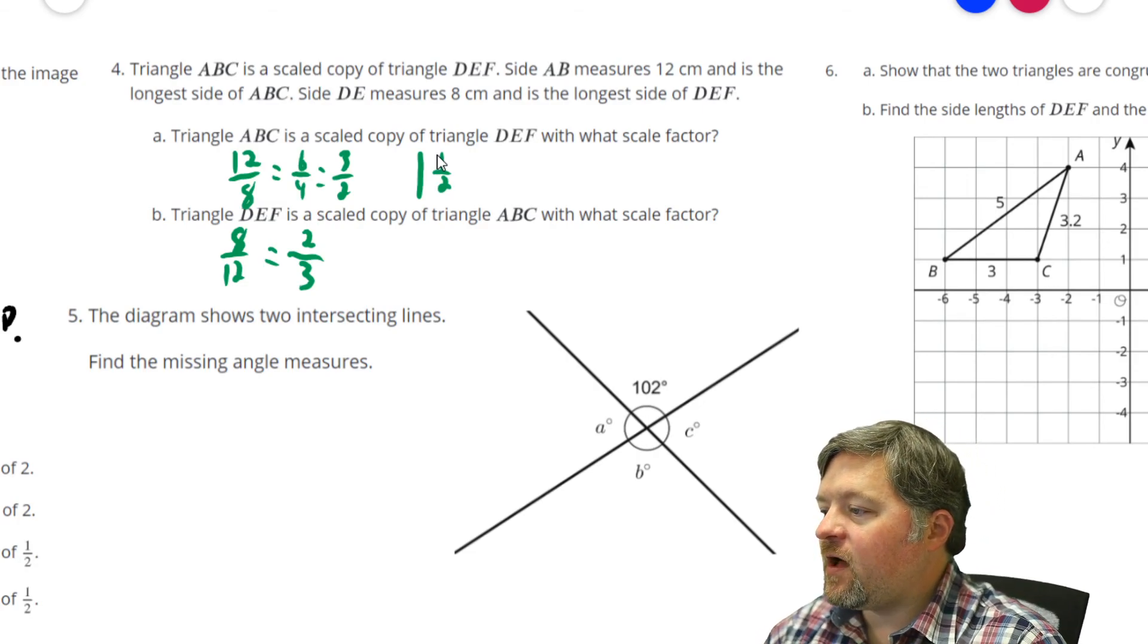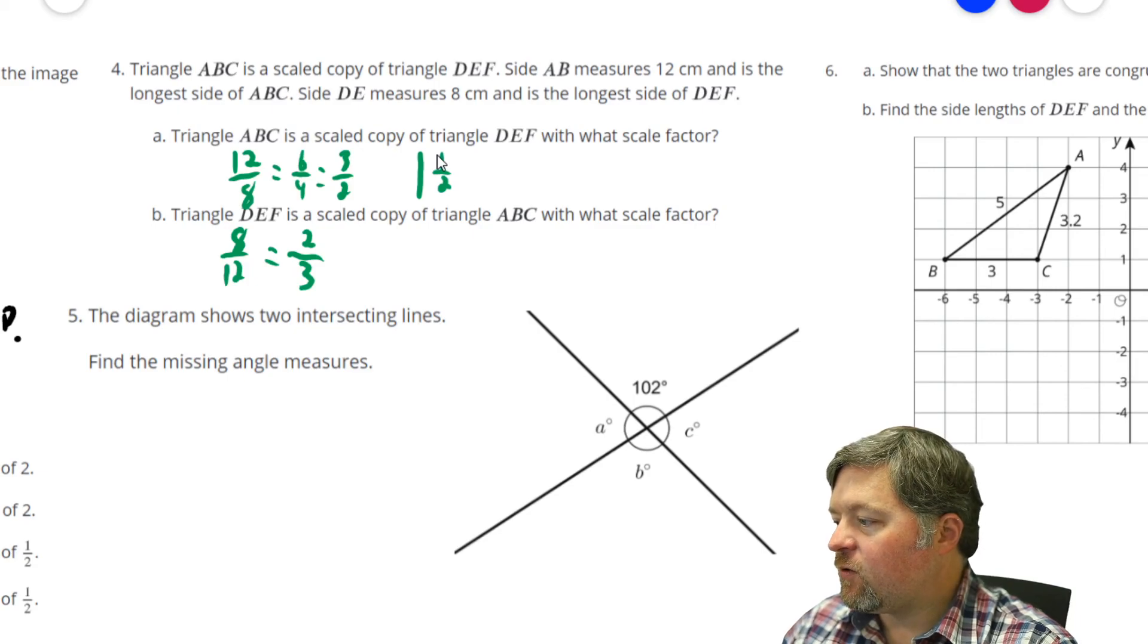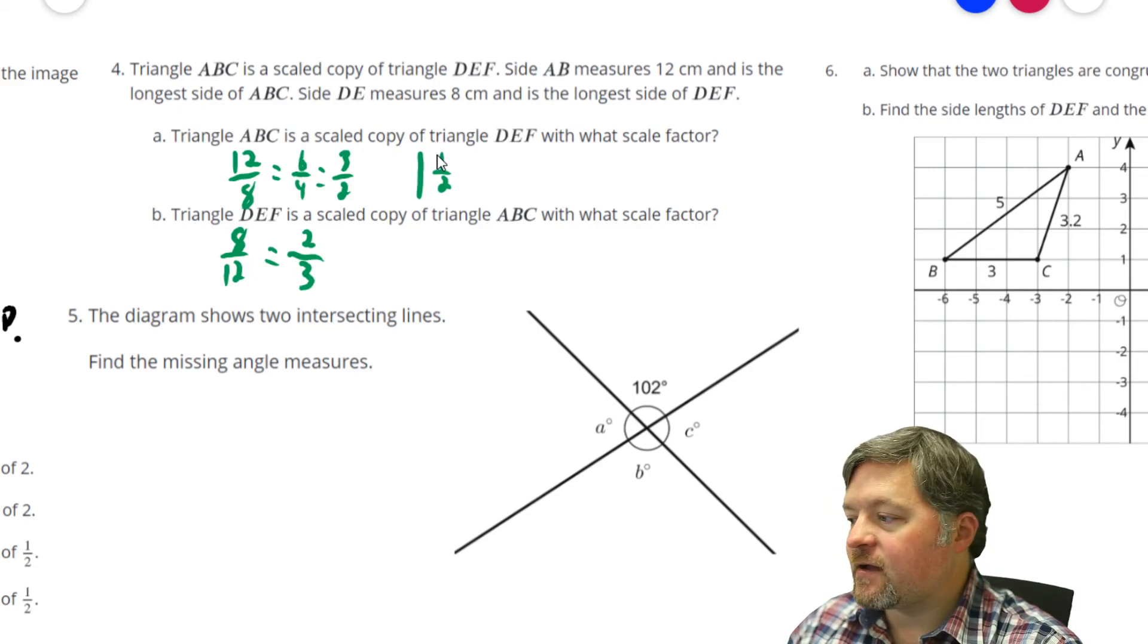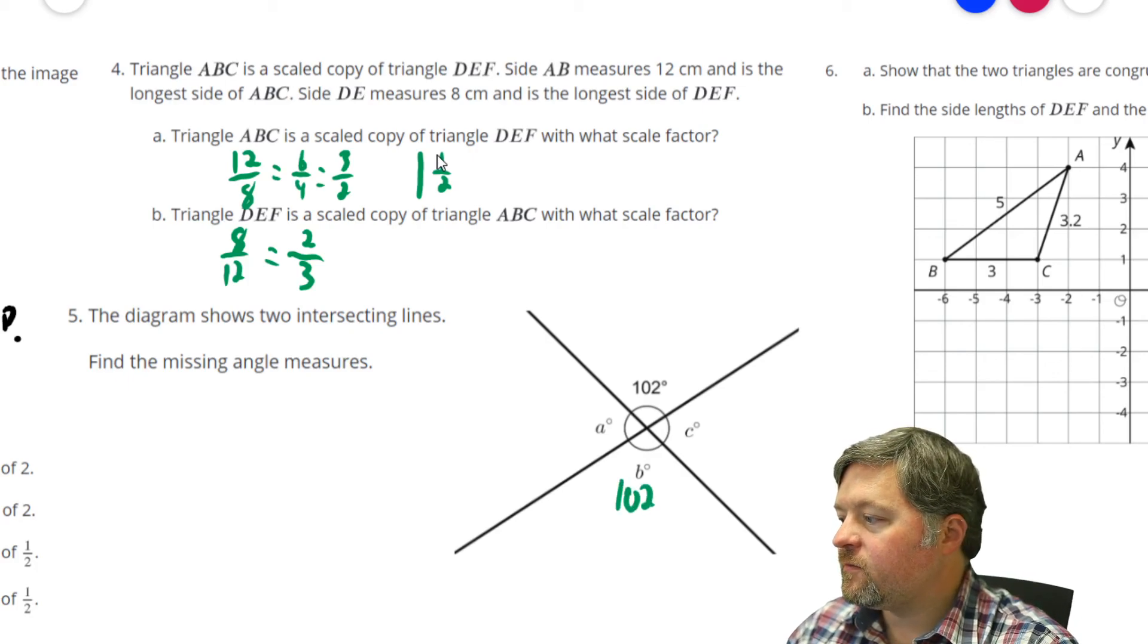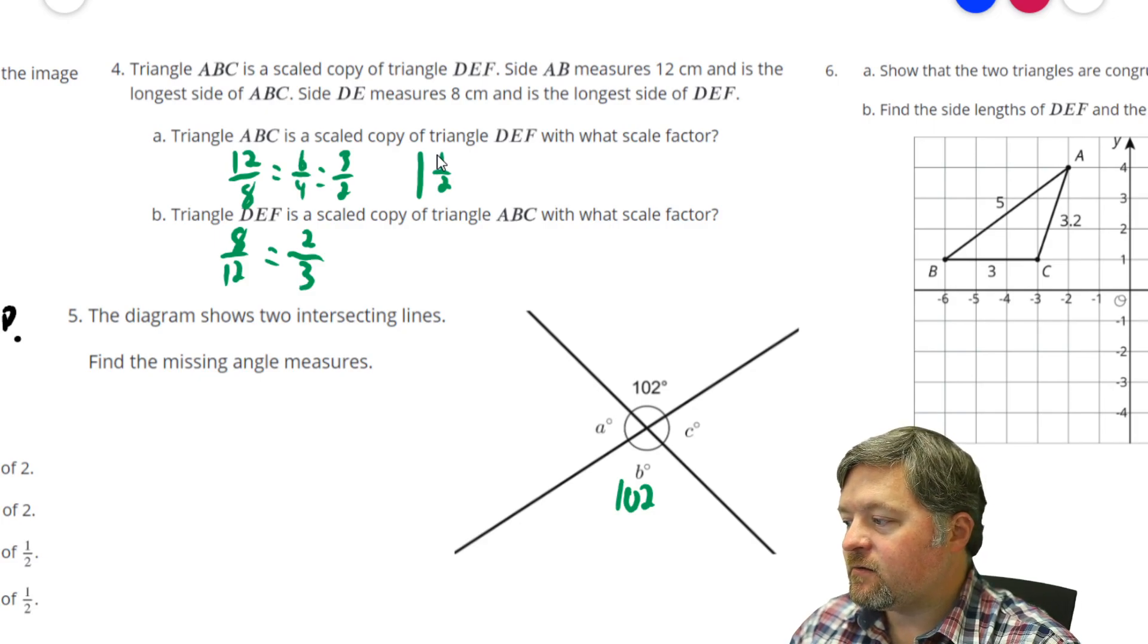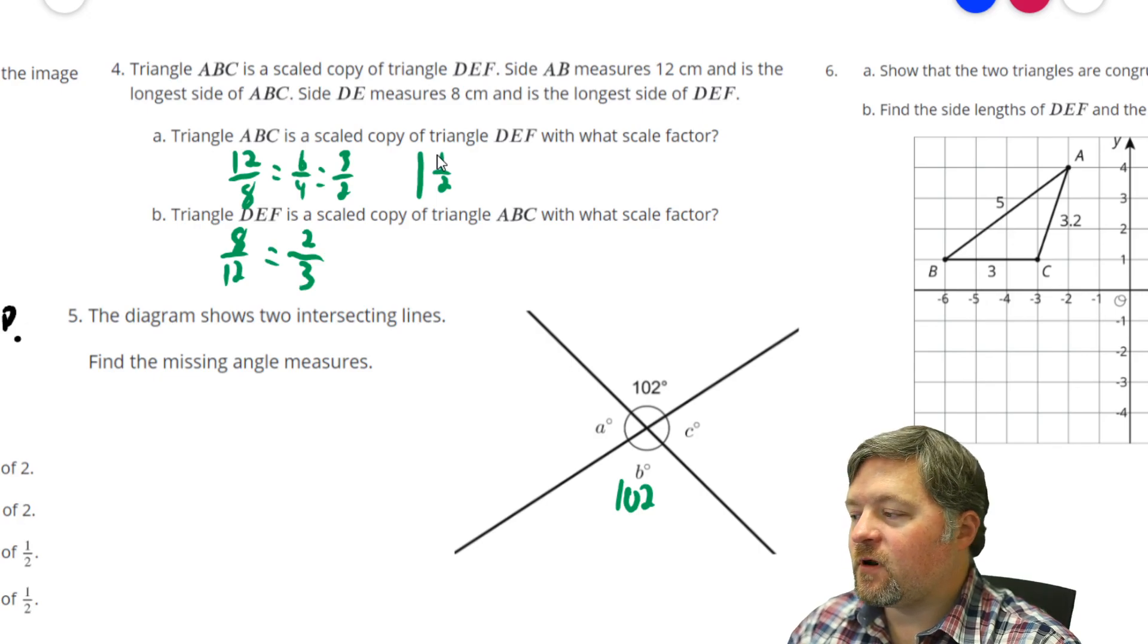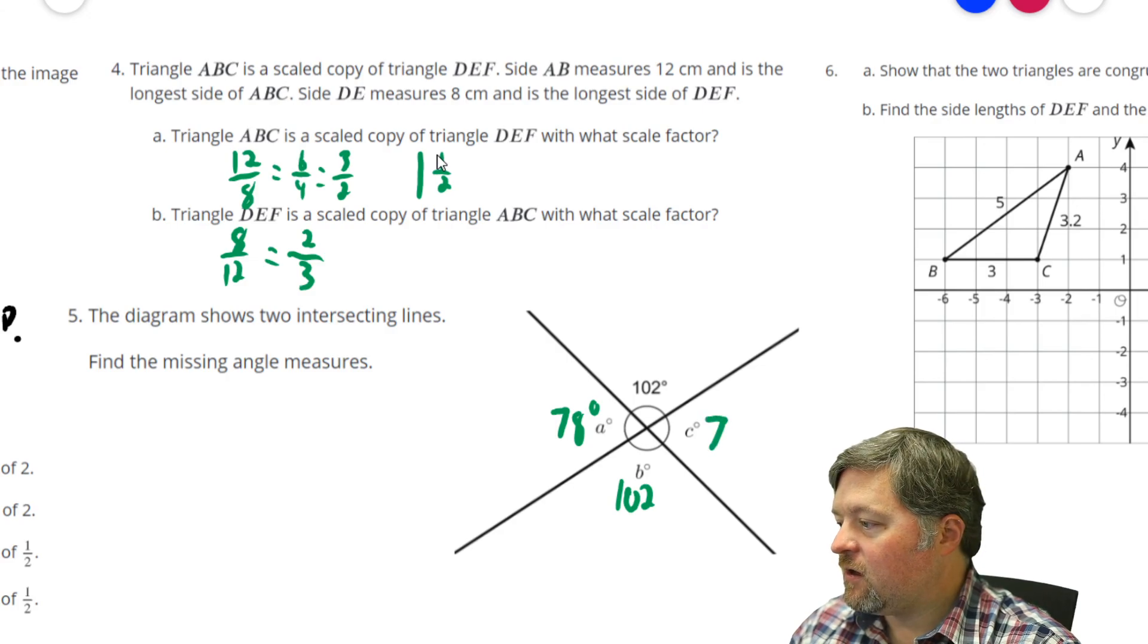Number 5. This diagram shows two intersecting lines. Find the missing angle measurements. Well, 102 and B are vertical angles. So, they both have to be 102. A and B have to have a sum of 180, which means A plus 102 has to equal 180. 180 subtract 102 is 78 degrees. A and C are also vertical angles, so this also has to be 78 degrees.